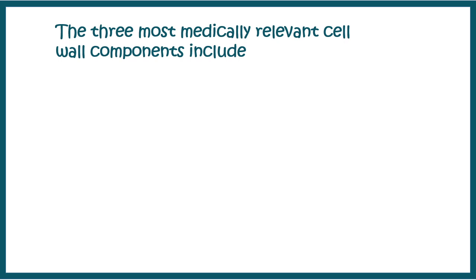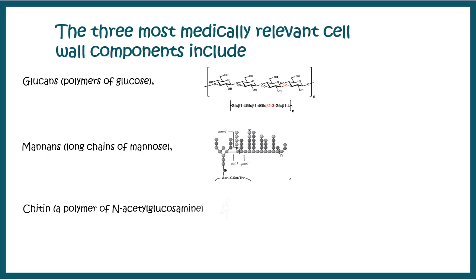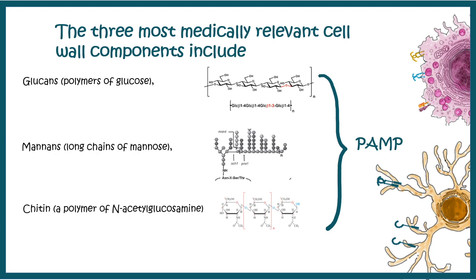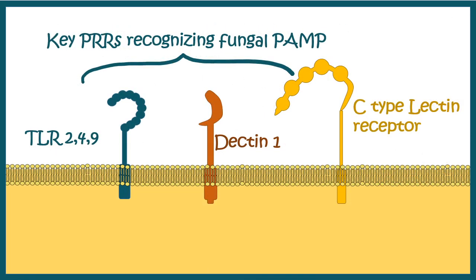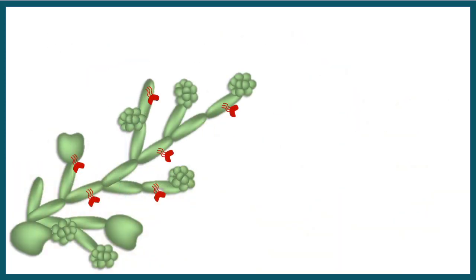The three most medically relevant cell wall components of fungi include glucans, mannans, and chitin. All three can act as PAMPs — pathogen-associated molecular patterns — which are recognized by pattern recognition receptors on dendritic cells or macrophages. These include TLR2, TLR4, and TLR9 for detecting fungal components, while Dectin-1 and C-type lectin receptors are crucial for recognizing fungal PAMPs, enabling the innate immune system to identify and respond to fungal infection.